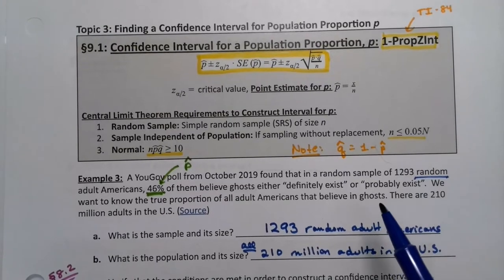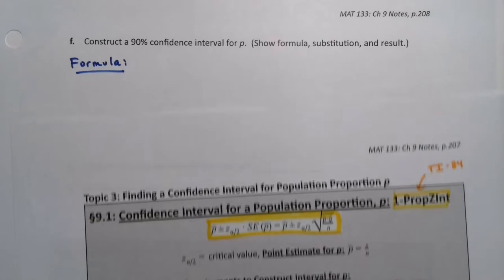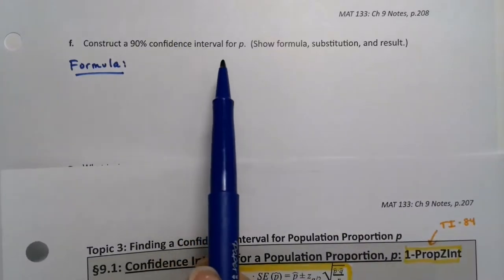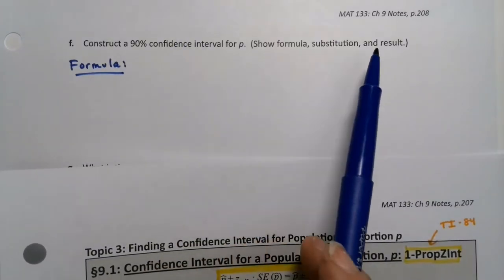We want to continue with this example to the next page where it asks us to construct a 90% confidence interval for P. It asks us to show the formula, substitution, and result.